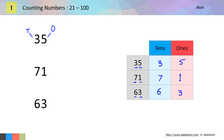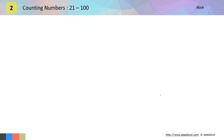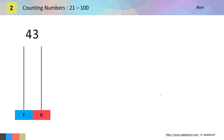Now let us move to the next slide. In this case, let us see a few examples to place numbers on the Abacus. On the Abacus, we draw circles for the numbers of 10s and 1s. We will draw circles equal to the right hand side number on the 1s line, and circles equal to the left hand side number on the 10s line.